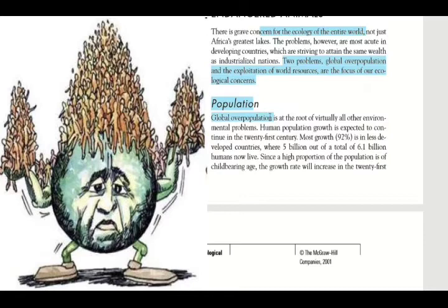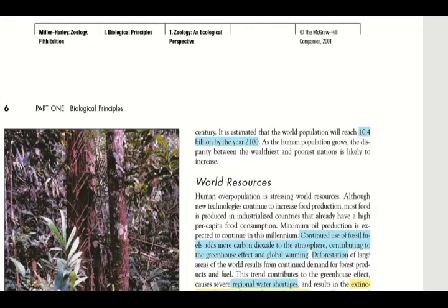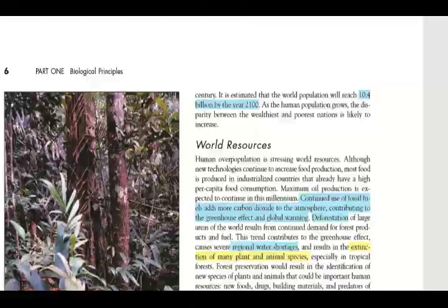Global overpopulation is considered the root of virtually all other environmental problems, including deforestation and global warming. Human population growth is expected to continue in the 21st century. At the time this book was written, 5 billion out of a total of 6.1 billion humans were alive, and it is estimated that the world population will reach 10.4 billion by the year 2100.